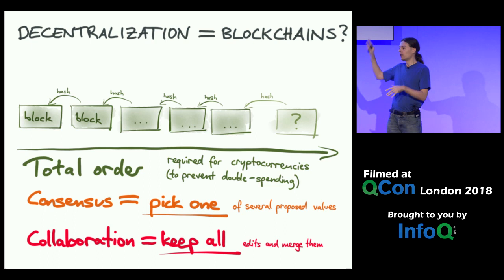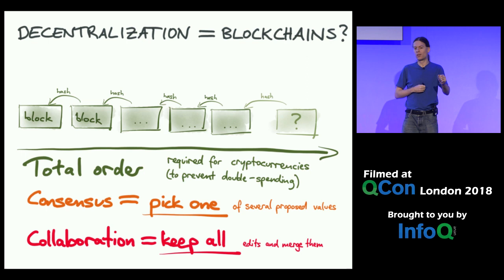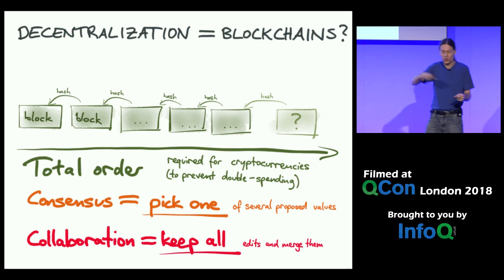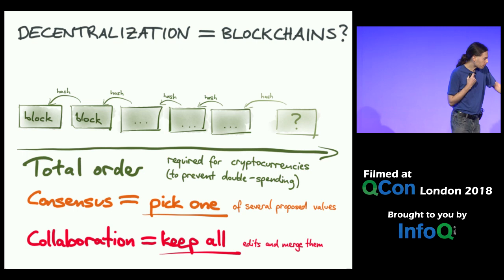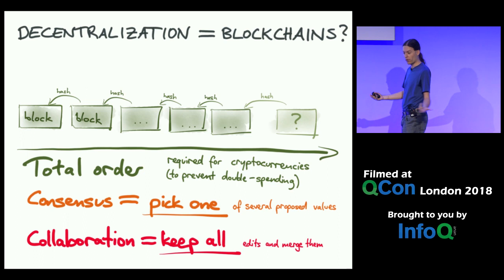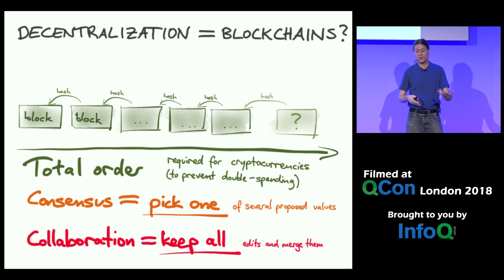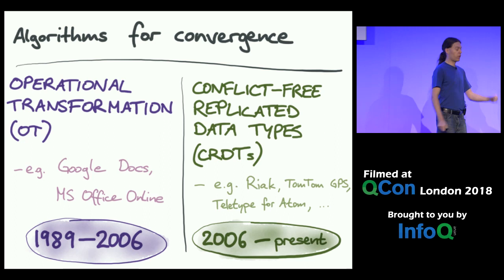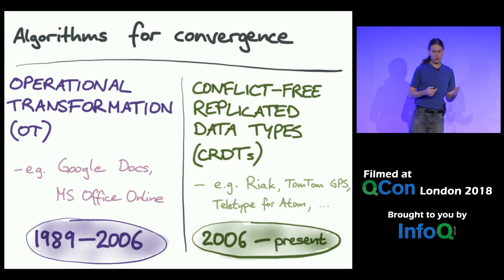What we want for collaboration protocols is to keep all changes that were made and merge them so they converge toward the same state. That is what I mean when I say this looks superficially like consensus but is really different — consensus is fundamentally about choosing one. So back to those two families of algorithms for achieving convergence: I'm going to talk briefly about some research we did on CRDTs.